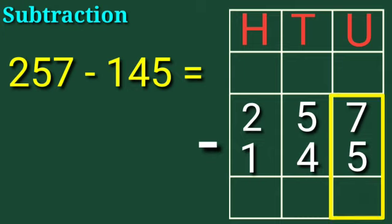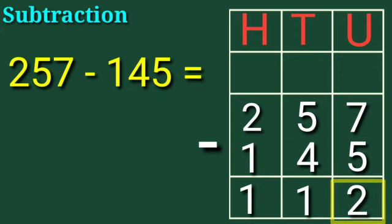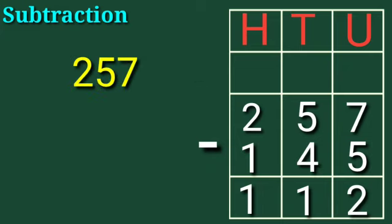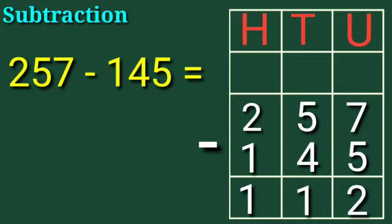Children, subtract these numbers. 7 minus 5 is equal to 2, which is under the units column. 5 minus 4 is equal to 1, which is under the tens column. 2 minus 1 is equal to 1, which is under the hundreds column. So 257 minus 145 is equal to 112.